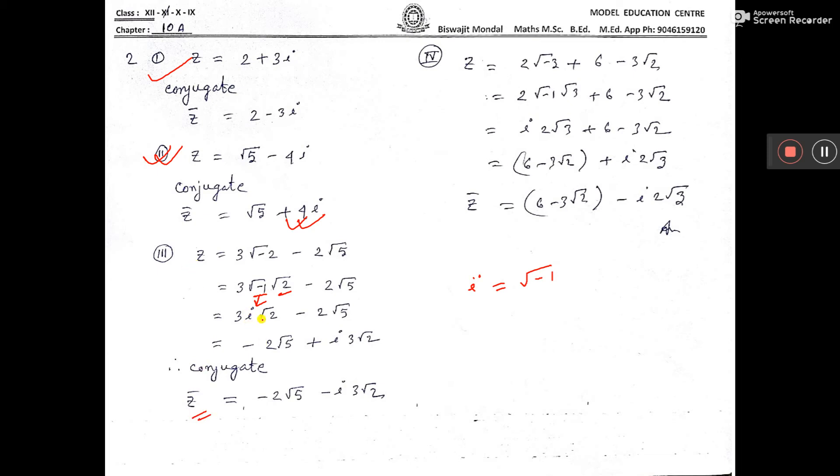Then z bar will be what? Before i, this one only, before this, plus sign will be minus. See here, it is written minus. This one written in front. Here also, it is simplified. Before i, only the sign will be changed for conjugate.